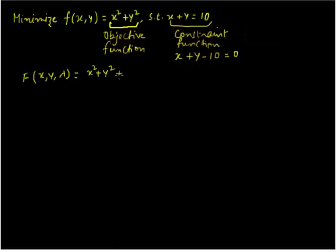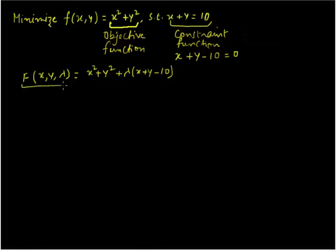We write a plus sign, introduce the new variable lambda, which is the Lagrangian multiplier, and inside the bracket we write the constraint function which we have set equal to 0. Once we have done that, we are going to take the partial derivatives of this function: first with respect to x, then with respect to y, and then with respect to lambda, and set each of the partial derivatives equal to 0.